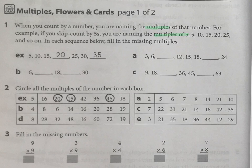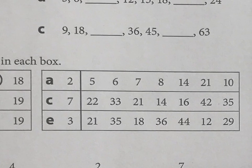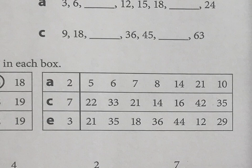Then circle the multiples for the second part. So for example, A: basically even numbers would be multiples of 2. So 5 is not going to work, but 6 would be a multiple of 2. 7 — no. 8 — and keep going. Which of those are multiples of 2?